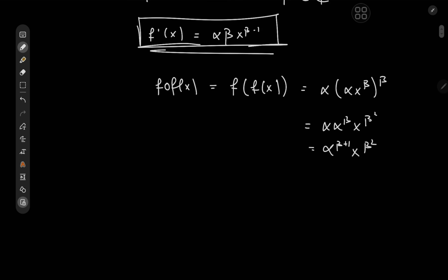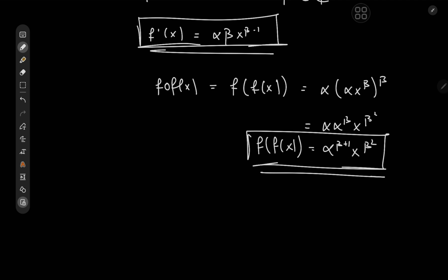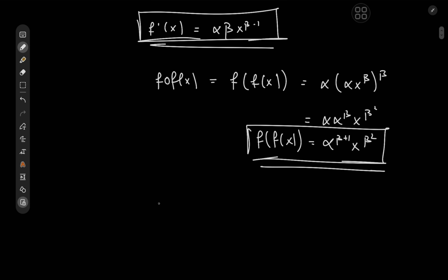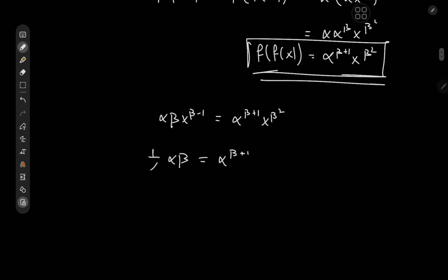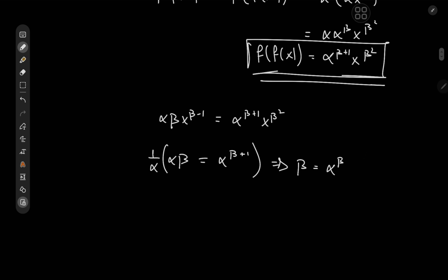So those are the two ingredients for our differential equation, and these two are supposed to be equal. So we have alpha times beta times x to the beta minus one equal to alpha to the beta plus one times x to the beta squared. The coefficients must be equal, so alpha times beta equals alpha to the beta plus one. Dividing through by alpha gives us beta equals alpha to the beta, which means alpha equals beta to the one over beta.